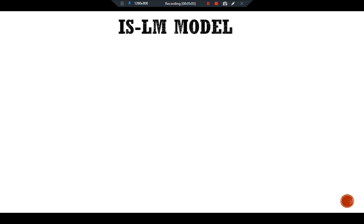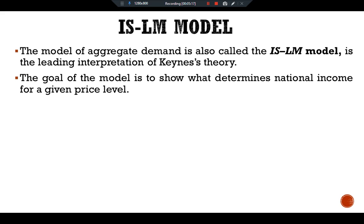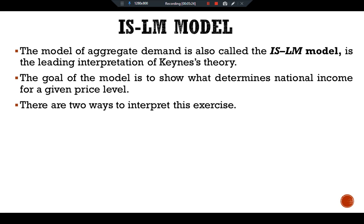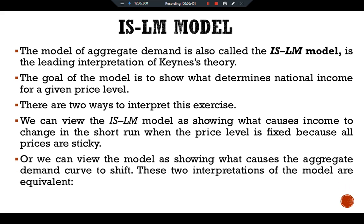The IS-LM model. The model of aggregate demand, also called the IS-LM model, is the leading interpretation of Keynes' theory. The goal of the model is to show what determines national income for a given price level. There are two ways to interpret this: we can view the IS-LM model as showing what causes income to change in the short run when the price level is fixed because prices are sticky, or we can view the model as showing what causes the aggregate demand curve to shift. These two interpretations of the model are equivalent.